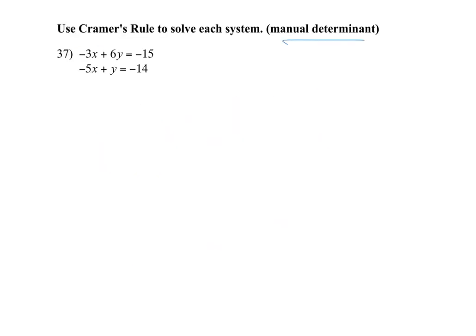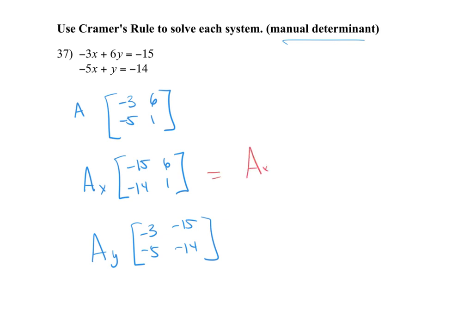Cramer's rule, you'll notice it says manual determinant. So for Cramer's rule, you're going to have a coefficient determinant, you're going to have an x determinant, and you are going to have a y determinant. To solve, you will put your x determinant divided by your coefficient, your y determinant divided by your coefficient, and that will be your x, y.